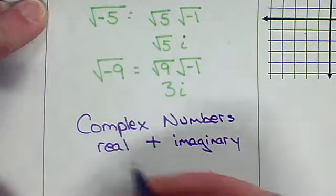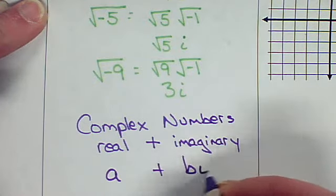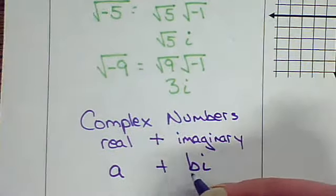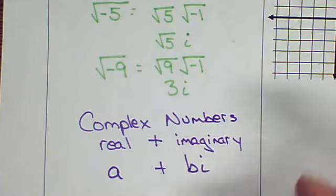So there's always going to be a part, maybe a number up here, and then an imaginary part. And there could be a coefficient here. It could be minus. It's okay. But we've got a real part and an imaginary part.